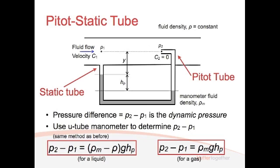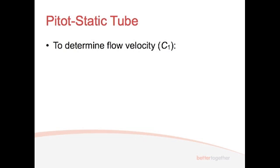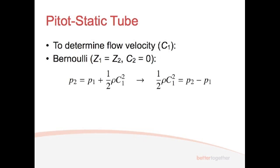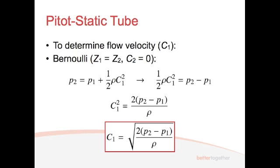To determine flow rates, we need to look at the velocity again. Applying Bernoulli's equation with Z1 = Z2 and C2 = 0 gives us an equation for C1. Rearranging — putting C1 on one side, pressure difference on the other, multiplying by 2 and dividing by ρ — gives C1² = 2(P2 − P1)/ρ. Taking the square root gives the value for C1. This is what's used with a pitot-static tube on the side of an aeroplane — that little device that pops out measures the pressure difference and you can work out how fast the plane is moving through the sky.